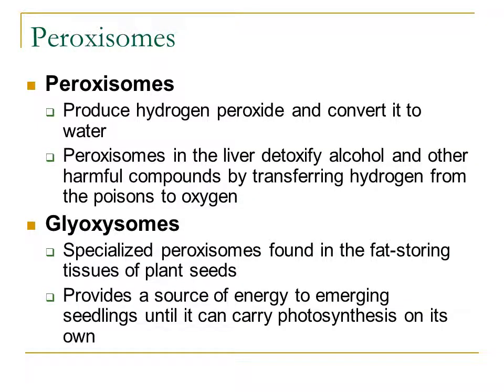Peroxisomes are also found within our cells. They have the ability to produce hydrogen peroxide and convert it to water. They're really important because, similar to the smooth endoplasmic reticulum, they help detoxify different types of poisons — specifically, peroxisomes do a really good job of detoxifying different types of alcohols. Peroxisomes in the liver detoxify alcohol and other harmful compounds by transferring hydrogen from the poisons to oxygen.